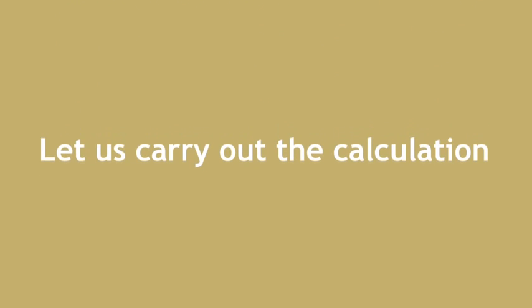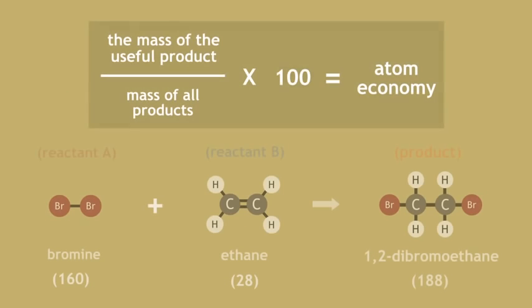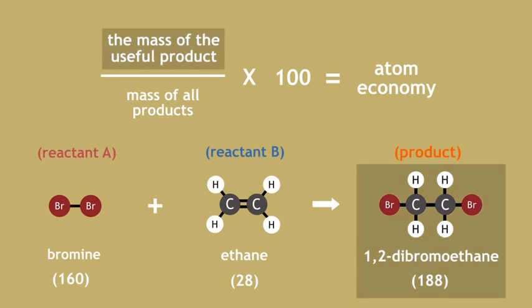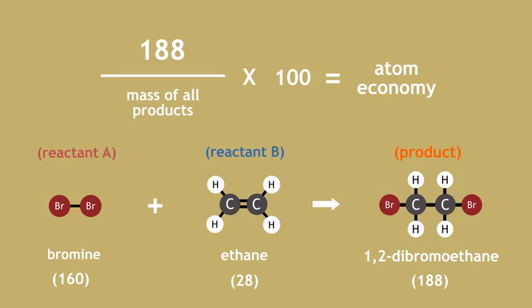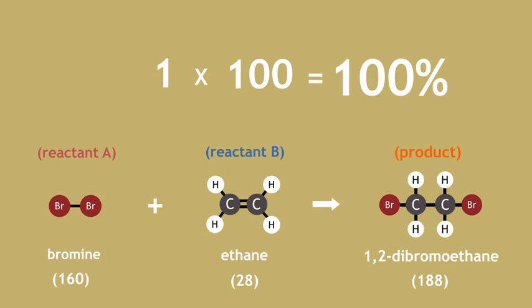Now, let us carry out the calculation. 1,2-dibromoethane has a molecular mass of 188. Look at our equation. The mass of the useful product is 188, divided by mass of all the products, 188, equals 1, multiplied by 100, equals 100%.